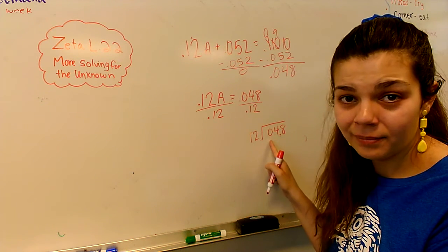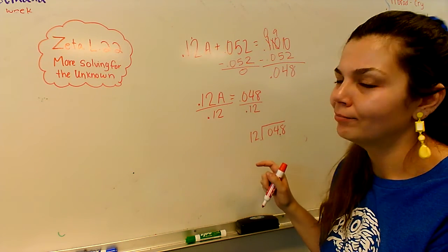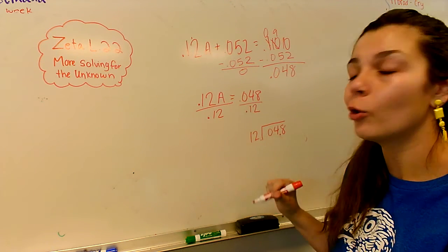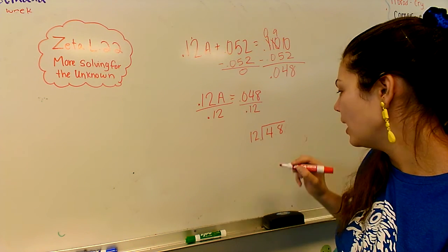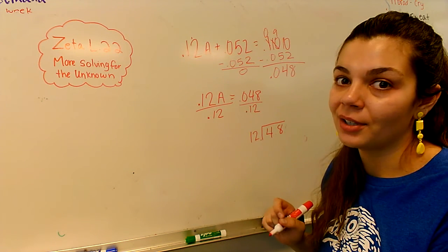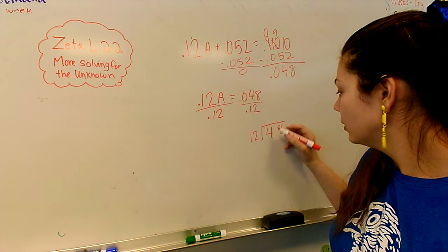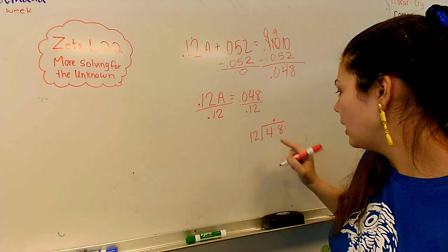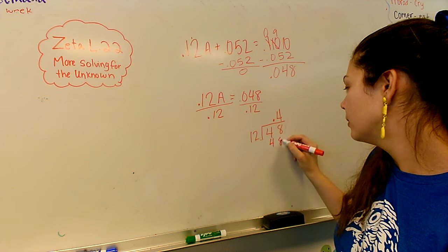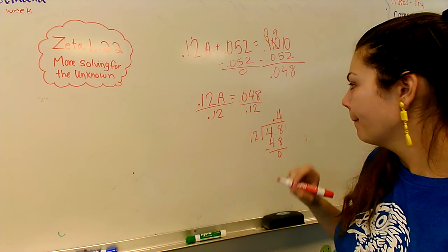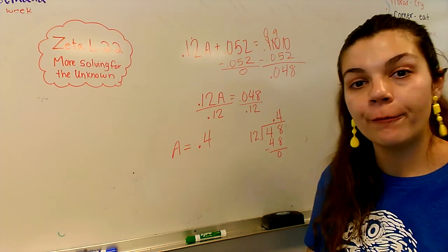Okay, now this changes our problem because our new problem is 12 divided by 4.8. Do I need this 0 here? No. This 0 is not a part of my whole number. 0, 4.8? Nah. We just say 4.8. So if you want, if that ever comes up, you can just erase that and make it 4.8. It only works if there's a 0 in front of a whole number. All right, how many 12s go into 4? 0. Now we're going to move into that. How many 12s go into 48? 4 12s go into 48. All right, so now we have a equals 0.4.